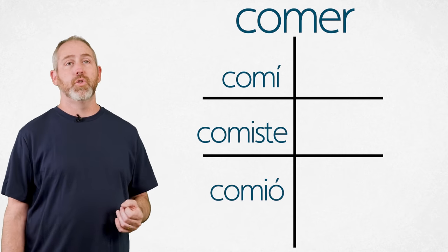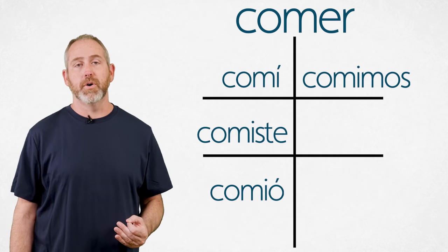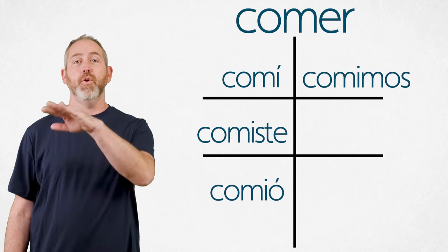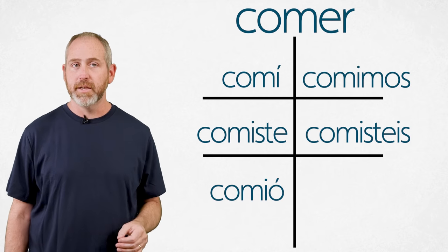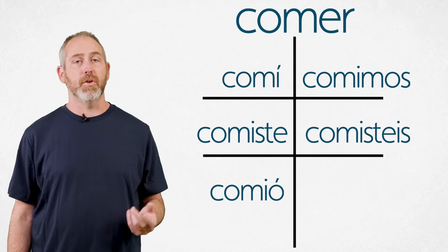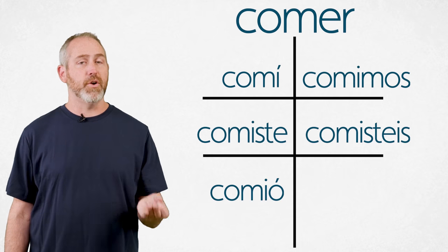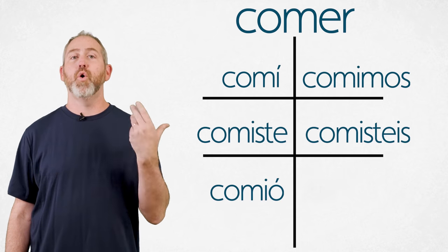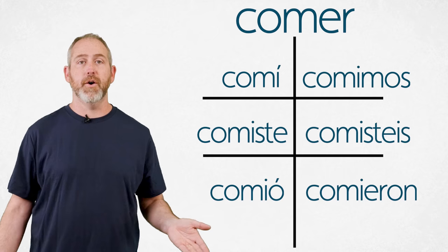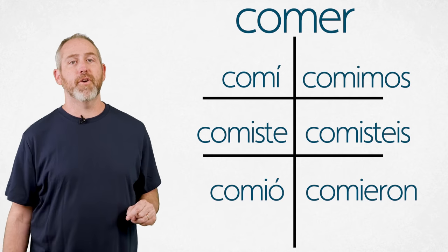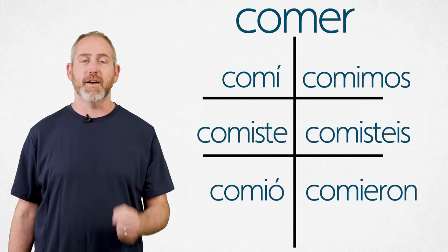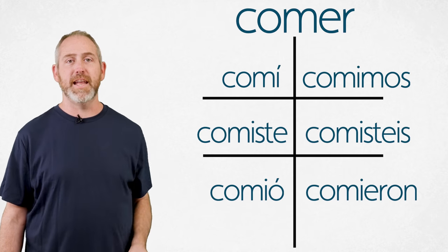All right. We ate. Nosotros comimos. You, plural, ate, Spain form. Vosotros comisteis. And they ate, or you, plural, ate. Ellos, ellas, or ustedes comieron. There you go. Now you can apply those endings to every single ER verb in the Spanish language. Knock them all out in one time and get the past tense down for ER verbs.